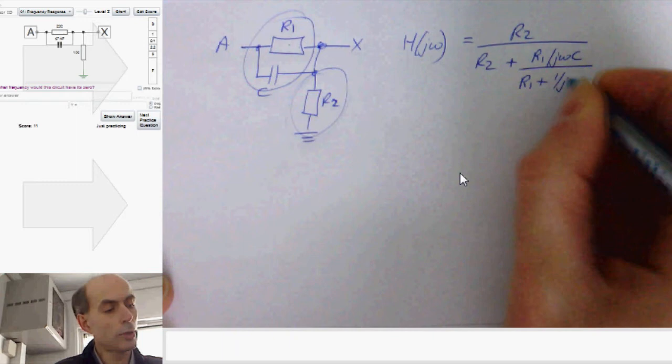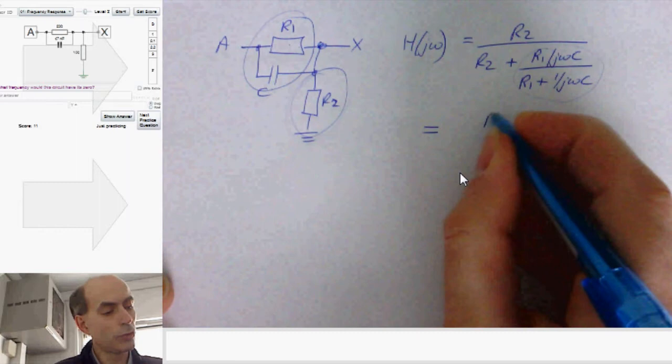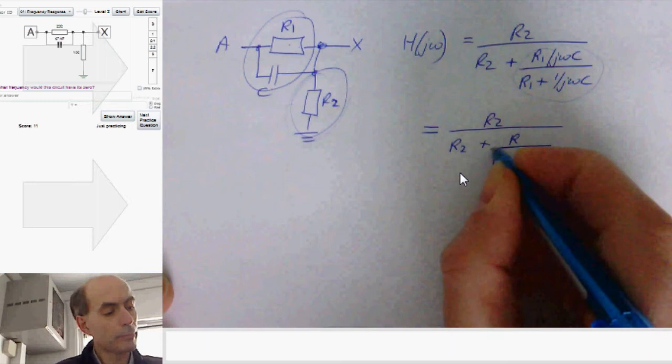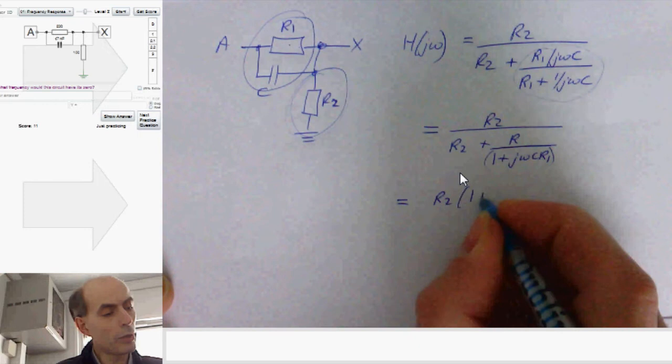OK. First thing to do, multiply everything by j omega c, or at least this term here, by j omega c, that's R2 over R2 plus R1 over 1 plus j omega c R1. And then multiply top and bottom by that term there, to get the j omegas off the bottom.